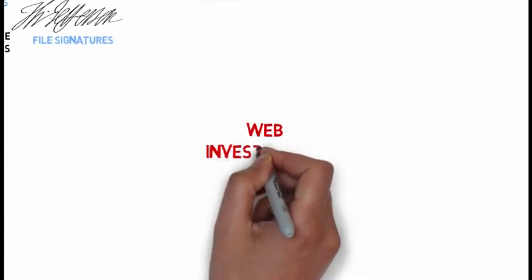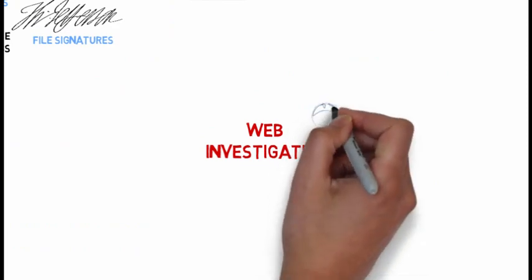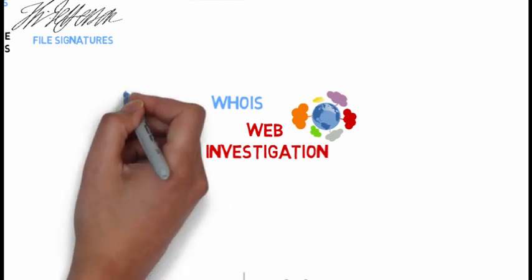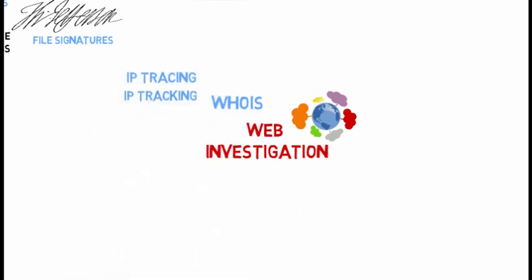In web investigation, one fundamental technique is a WHOIS search, which enables us to find out in whose name a particular domain or IP address has been registered. Of course, if a criminal puts up a phishing website, he will not use his real details. We also have IP tracking and IP tracing. A few years ago, a software professional from Bangalore was arrested by the Pune police on the charge that he had put up a defamatory blog against a prominent historical figure.